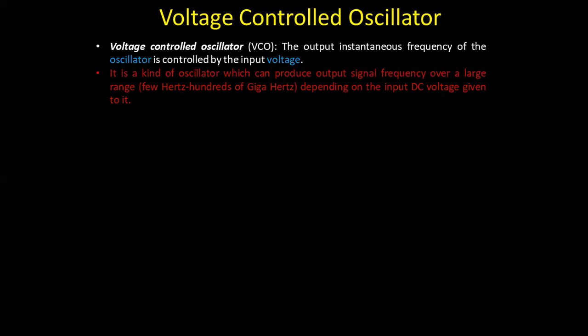It is a kind of oscillator which can produce output signal frequency over a large range — from a few Hertz to Gigahertz — depending on the input DC voltage. There are many applications where control voltages are generated, and due to that control voltage, a proportional frequency has to be generated. For such applications we use the voltage controlled oscillator.